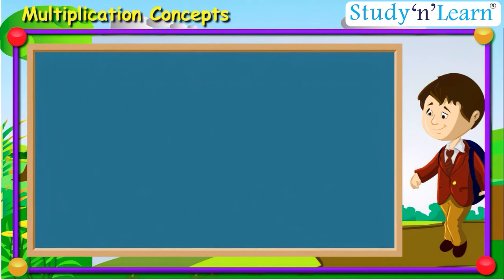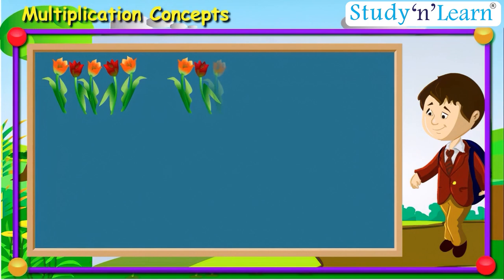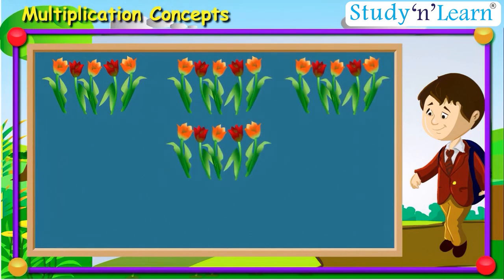Let us take another example. We have 4 groups of flowers, each containing 5 flowers. So how many flowers are there in total?